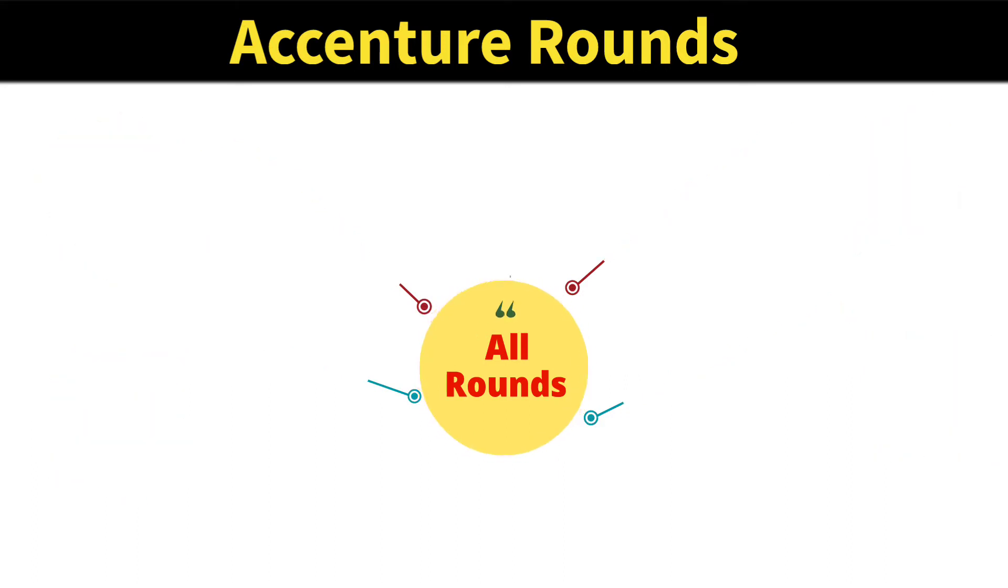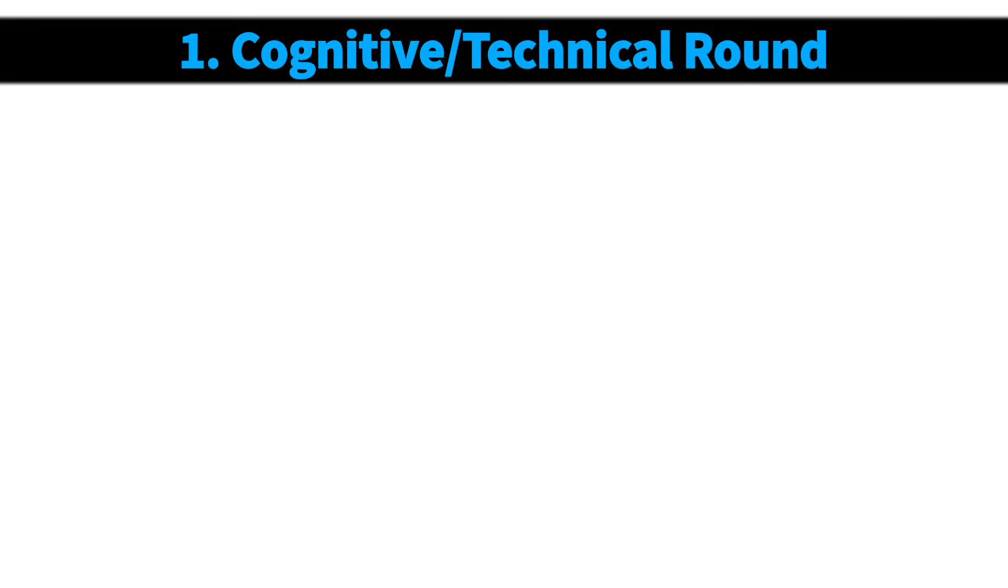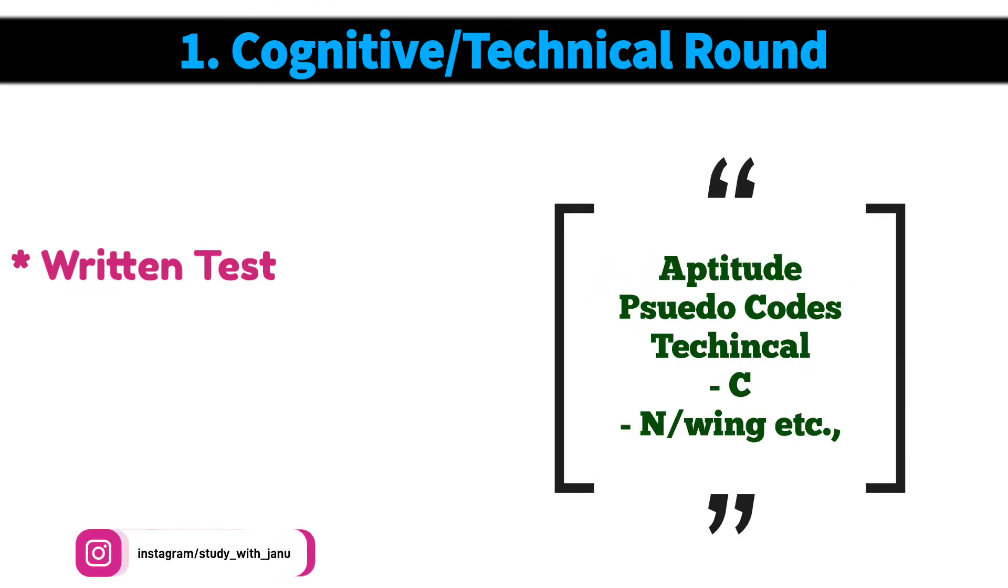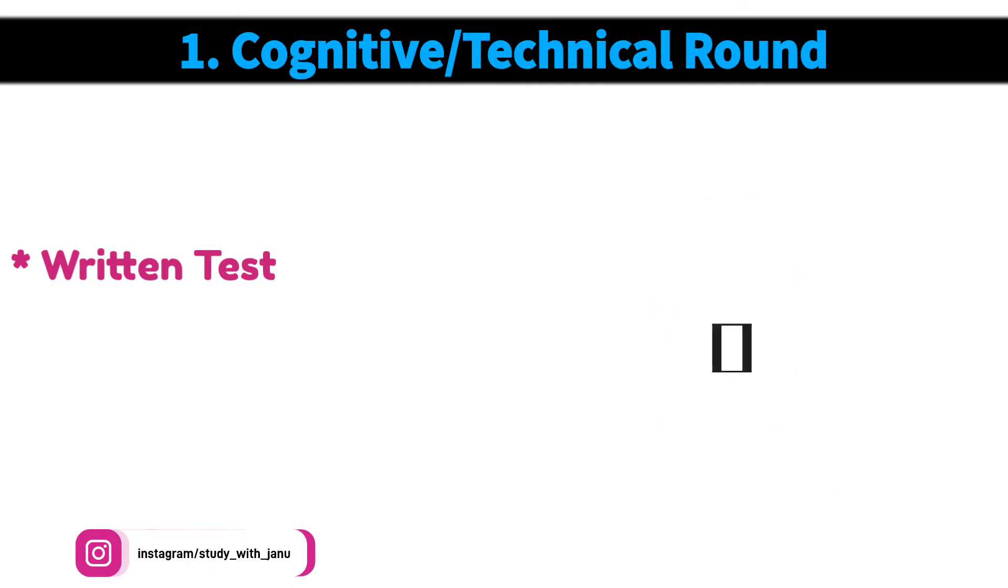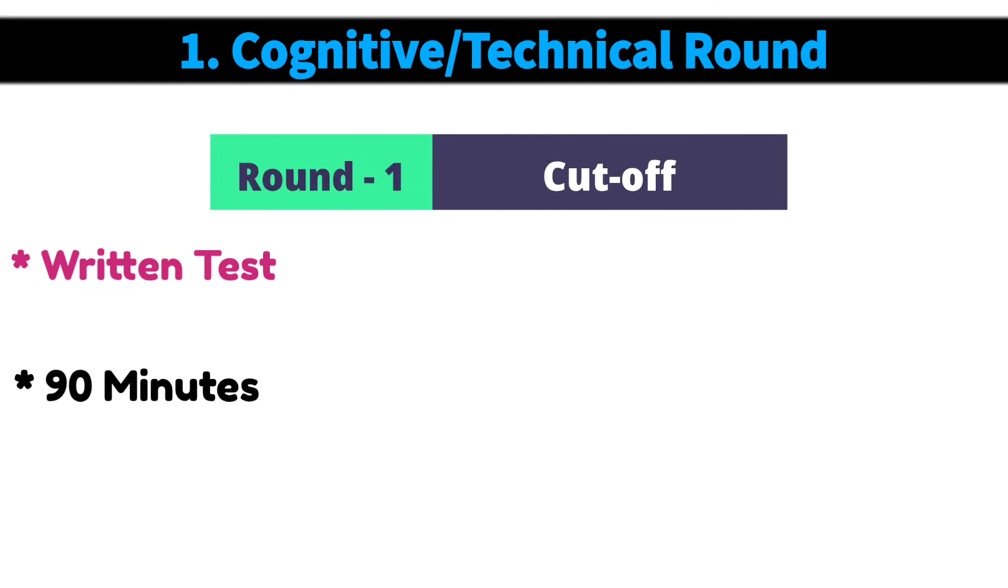The first round in Accenture is cognitive and technical assessment. This is a written test in which you'll see aptitude questions, pseudocode questions, and some fundamental technical questions like C, networking, etc. You will have 90 minutes to complete this round. You need to reach the cutoff mark to get onto the next round, so this is an elimination round.